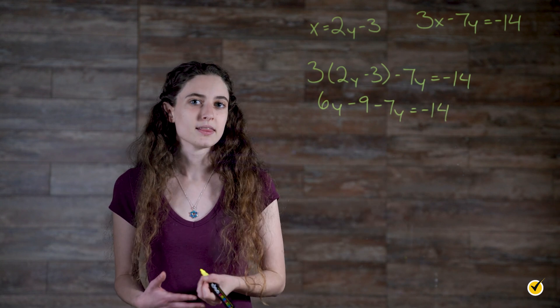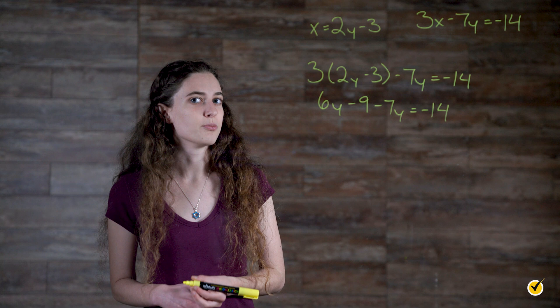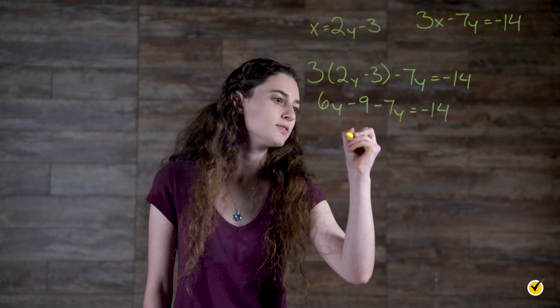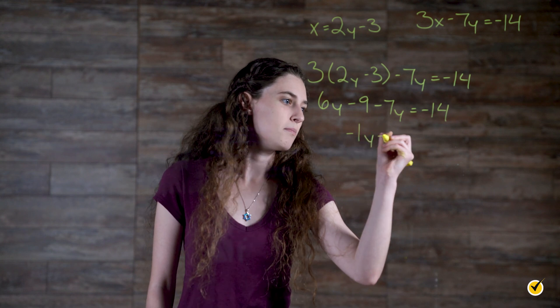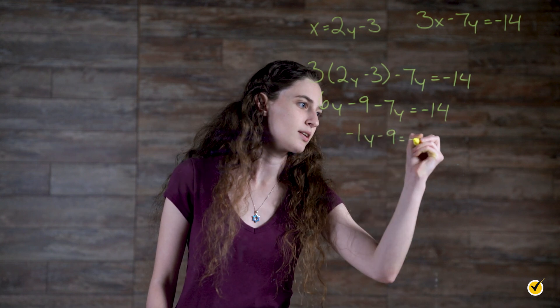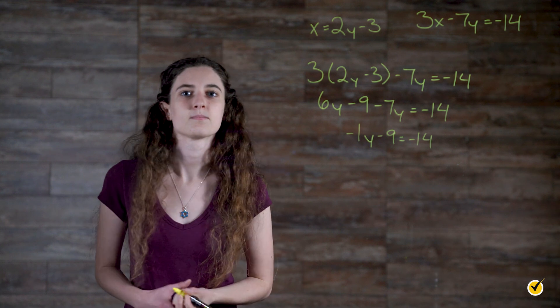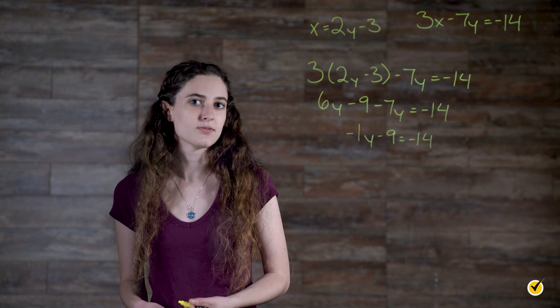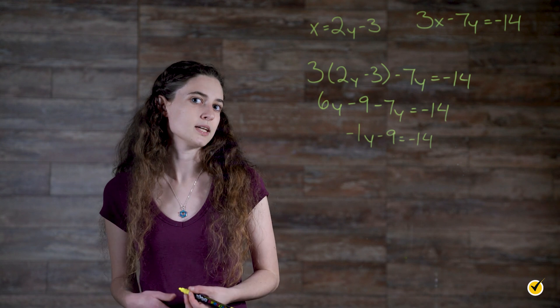Now we need to combine like terms, leaving the y variable on the left side of the equation. 6y minus 7y gives us negative 1y minus 9 equals negative 14. Solving for y is now possible by adding 9 to both sides of the equation and then multiplying both sides by negative 1.